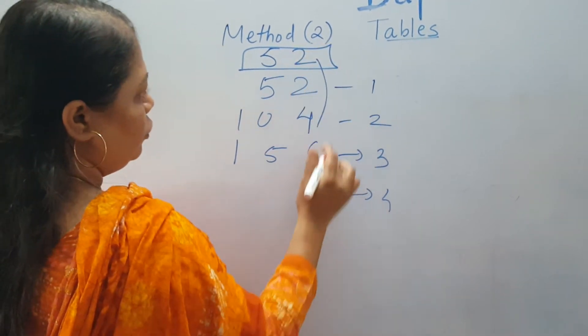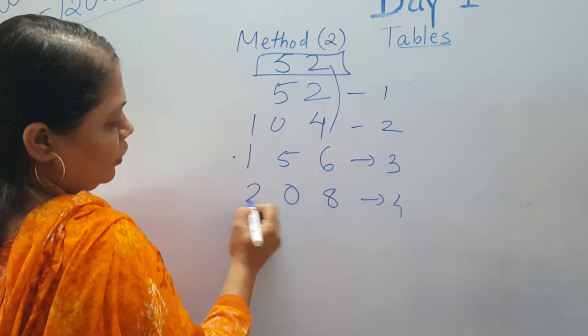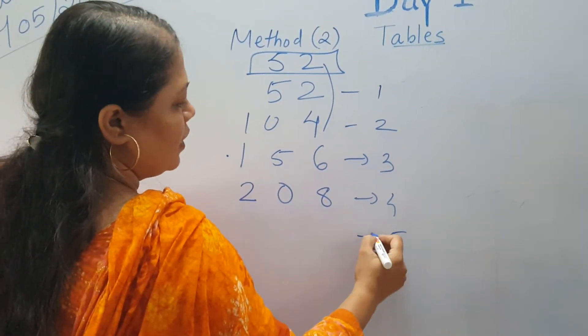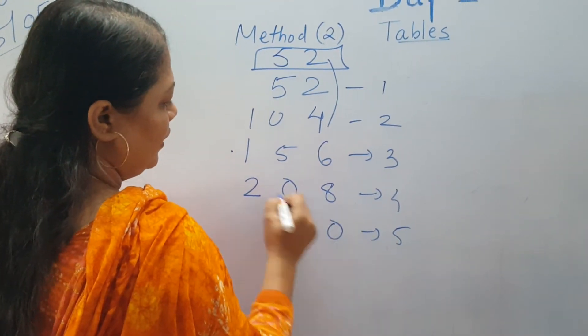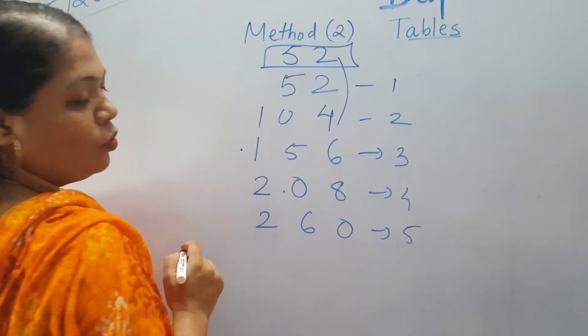6 and 2 is 8. 5 plus 5 is 10. 1 plus 1 is 2. 5 is the unit, plus 2 plus 8 is 10. 5 plus 1 is 6. 2 as it is.